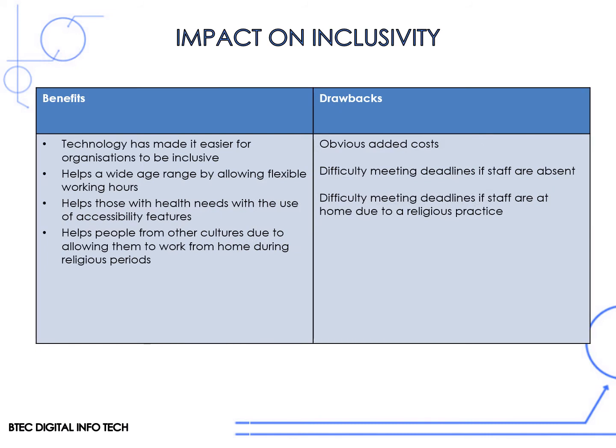When we think about the impact on inclusivity, technology has made it easier for organizations to be inclusive. A wide age range is allowed to participate in the business by allowing flexible working hours, which helps those with health needs or accessibility features that can't necessarily be met in the workplace - they can be allowed to work from home. We can also help people from other cultures by allowing them to work from home during religious periods. The drawbacks are obvious added costs, and we might have difficulty meeting deadlines if staff are absent due to a religious practice.